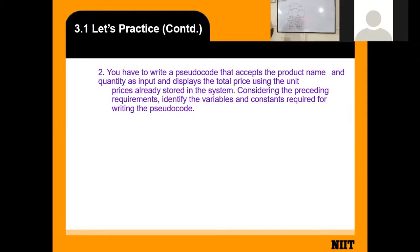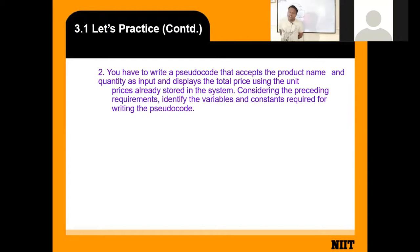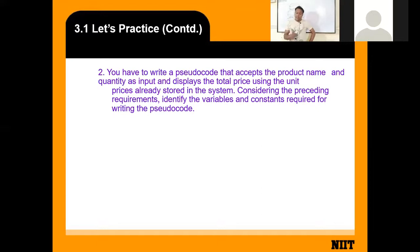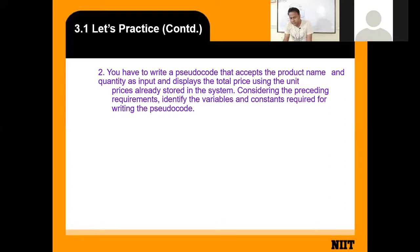The next question: we have to write a pseudocode that accepts the product name and quantity as input and displays the total price using a unit price that is already stored in the system. Considering the preceding requirement, identify the variables and constants required for writing the pseudocode — how many variables and how many constants are required in this scenario?